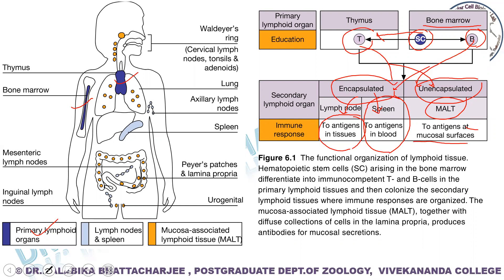Remember these three functional differences between the different categories of secondary lymphoid organs: lymph node generates immune response to antigens in tissues, spleen generates immune response to antigens in blood, and mucosal-associated lymphoid tissue generates immune response to antigens at mucosal surfaces. Let us move on to the first category, the primary lymphoid organs.